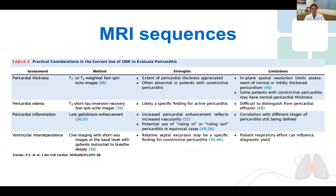Secondly, pericardial edema assessment using T2-STIR sequences with elevated signal. Thirdly, it can assess pericardial inflammation and fibrosis on delayed gadolinium enhancement sequences, which at the Cleveland Clinic we use the PSIR sequence with fat saturation pulses. Finally, MRI can assess for ventricular interdependence using CINE imaging with and without free breathing, and some centers use tagging sequences as well.